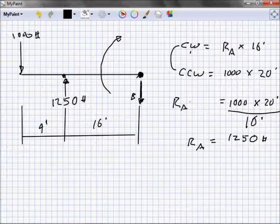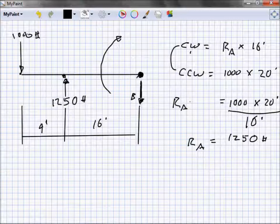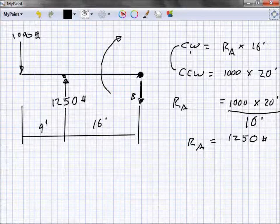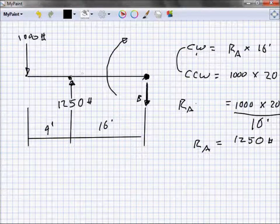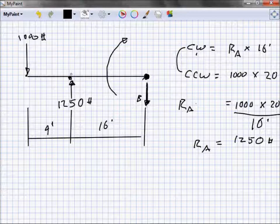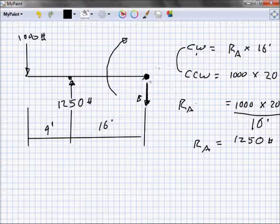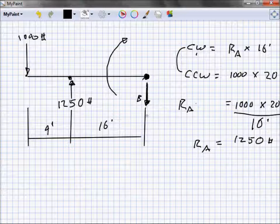When you're setting these problems up, you've got to make an assumption. You've got to say I think it's going to go this way. You work out the problem, if it turns out to be wrong, then you just have to change the direction of that arrow. So now does it make sense? I got 1,250 coming up, coming down I got 1,000 plus what? 250.